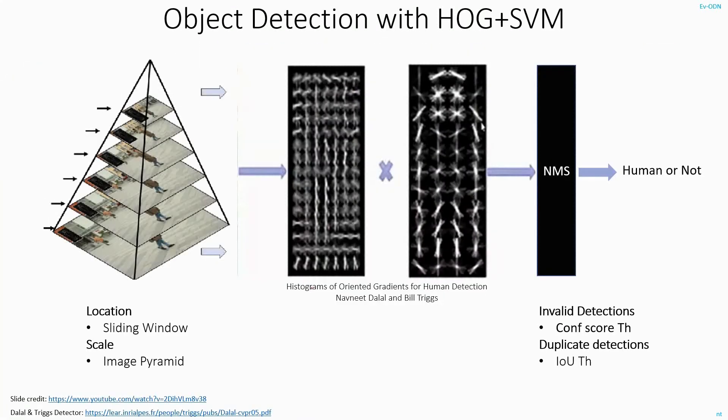So, this completes my object detection pipeline. At the input side, to tackle the problem of location, that is, object can be present at any location in the image, I am using a sliding window technique. And to account for different scales of the object, I am using image pyramid. And at the output side, to remove all the invalid detections, I am using a confidence score threshold. Even after doing that, I will be having some duplicate detections. This, I will be removing by using the IOU threshold. This technique is called non-max suppression.